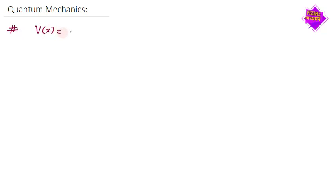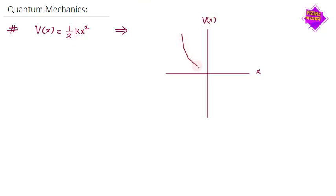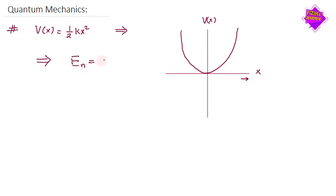If we have a potential that has the form ½kx², then in quantum mechanics this potential is symmetric about the origin — the x-axis versus potential energy V(x). This is an exactly solvable problem. You can get the energy eigenstates En = (n + ½)ℏω, where n is the quantum number varying from 0, 1, 2, 3, ... with n=0 as the ground state, n=1 the first excited state, and so on.